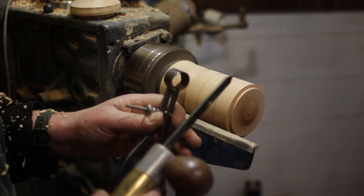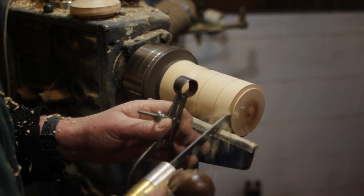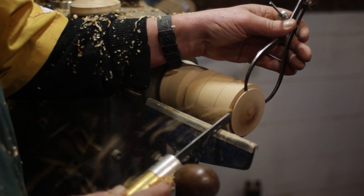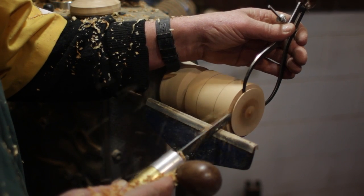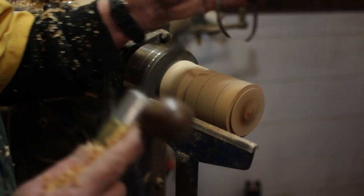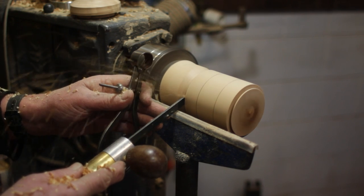And now taking the parting tool and the spring calipers we part into the diameter set on the caliper. We do this at both ends creating tenons which will give us the measurement that we want on the side.